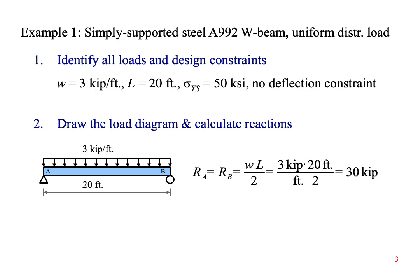Step two is to draw the load diagram and calculate the reactions. We can solve for the reactions by drawing an equivalent load diagram and working out the sum of the moments and sum of the forces, but it's much easier in this case to go to Appendix F and use the formula method. The reaction forces at points A and B are both 30 kips.